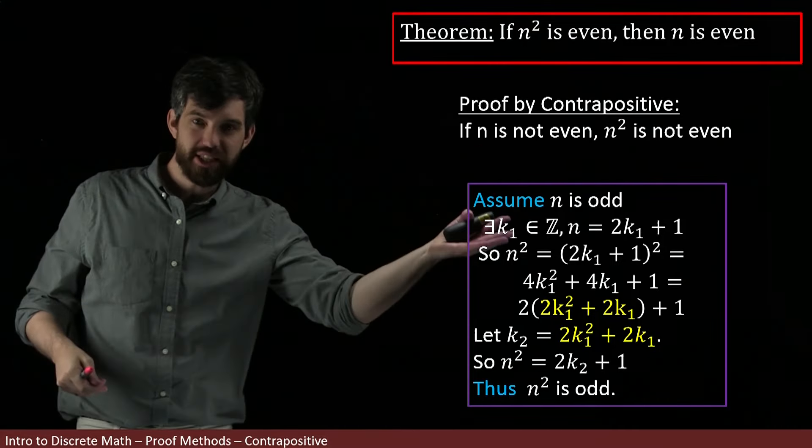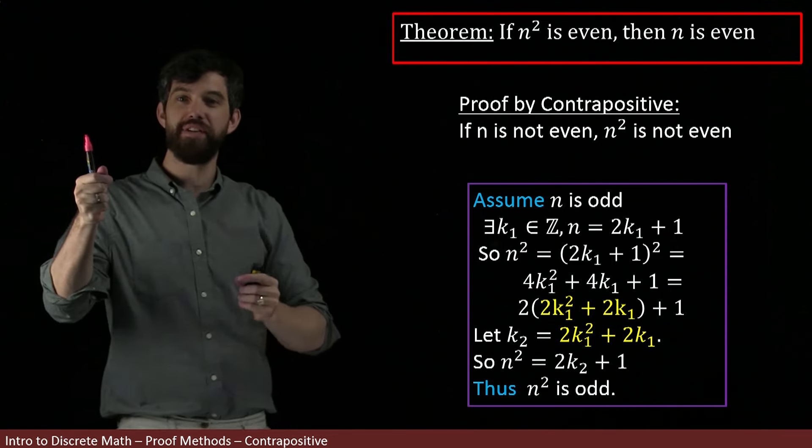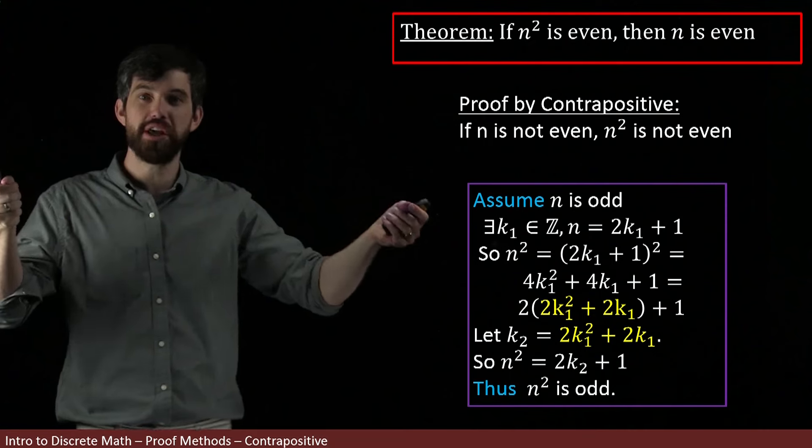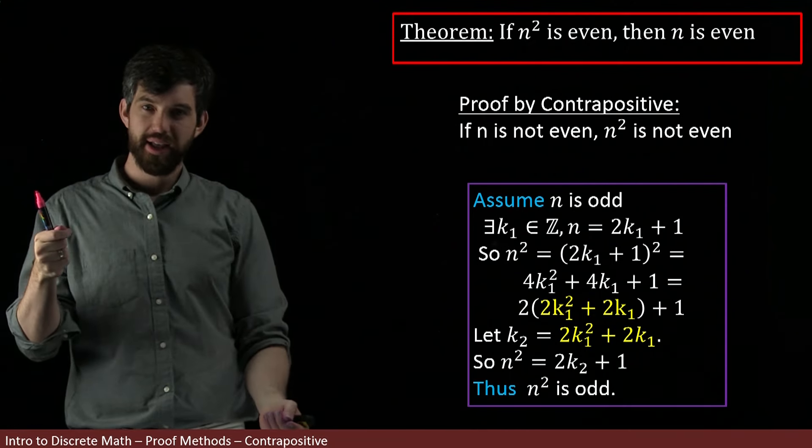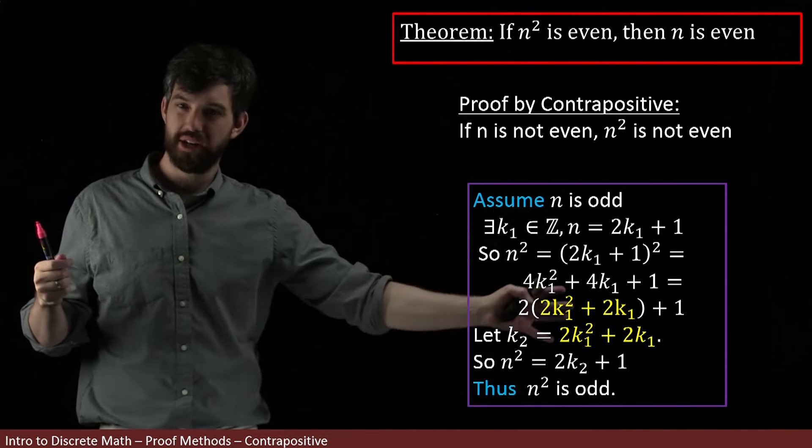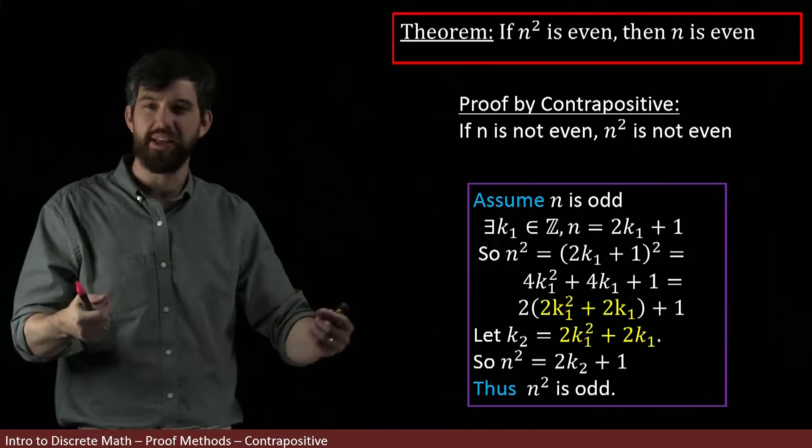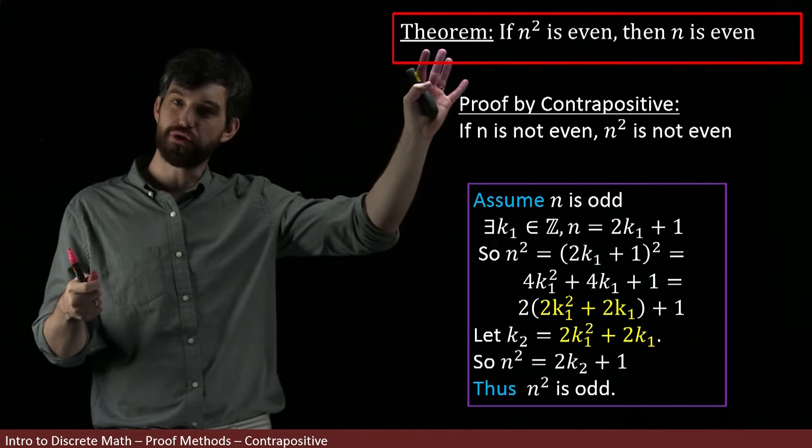Indeed, this claim 'n² even implies n is even' is the same claim - it's logically equivalent to 'n is odd implies n² is odd'. When it's written in its contrapositive form, it's quite tractable and we were able to do its proof almost directly. It just fell out from our assumptions in a way that wasn't true when I tried to directly prove the original.